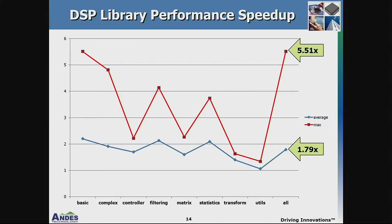Here is the performance speedup of our DSP libraries across eight different categories: basic functions, complex functions, controller, filtering, matrix, statistics, transforms, and utilities. The blue dot shows the average speedup of all functions in a category, and the red dot shows the maximum speedup. Among the eight categories, four — basic, complex, filtering, and statistics — have an average speedup of more than two times. Overall, all functions in the library have an average speedup of 1.79x with a maximum speedup of 5.51x.